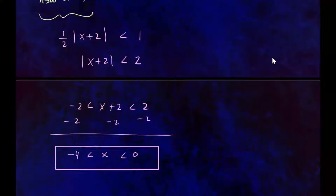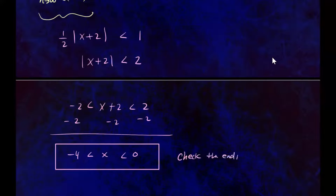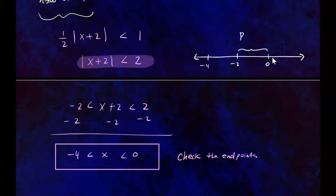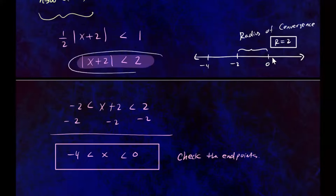So there we have the interval of convergence — but we need to check the endpoints, since sometimes there's convergence there too. Also, this inequality gives us the radius of convergence. If we draw this on the real line, the series is centered at negative 2: going 2 units to the right gives 0, and 2 units to the left gives negative 4. So the radius of convergence R equals 2.